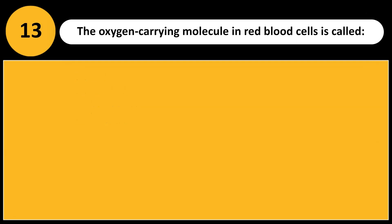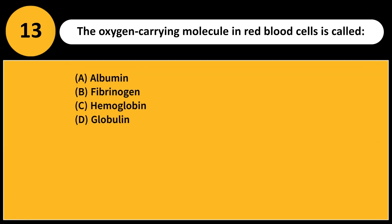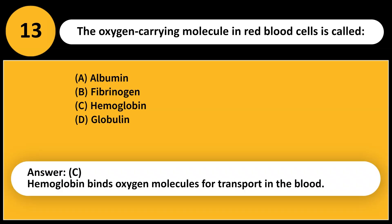The oxygen-carrying molecule in red blood cells is called: A. Albumin. B. Fibrinogen. C. Hemoglobin. D. Globulin. Answer: C. Hemoglobin binds oxygen molecules for transport in the blood.